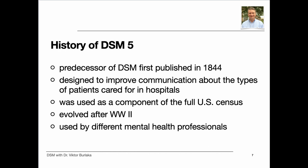The American Psychiatric Association first published a predecessor of DSM in 1844, as a statistical classification of institutionalized mental patients. It was designed to improve communication about the types of patients cared for in the hospitals. This forerunner to DSM also was used as a component of the full U.S. census. After World War II, DSM evolved through four major editions into a diagnostic classification system for psychiatrists, other physicians, and other mental health professionals that describes the essential features of the full range of mental disorders.